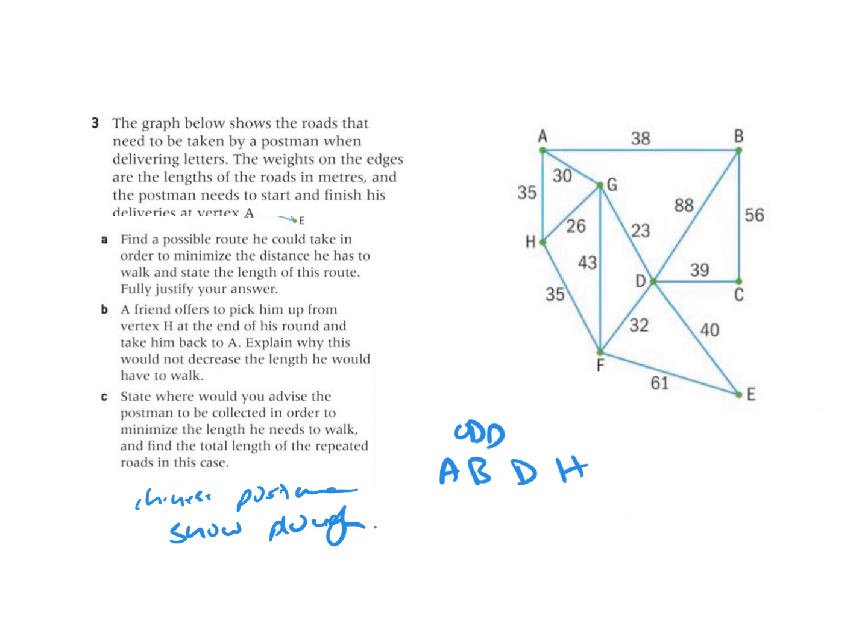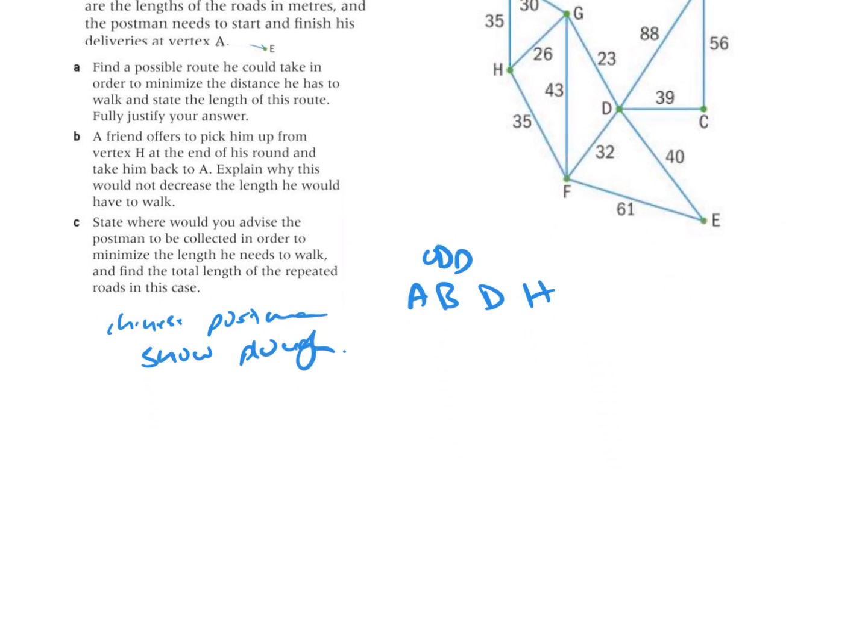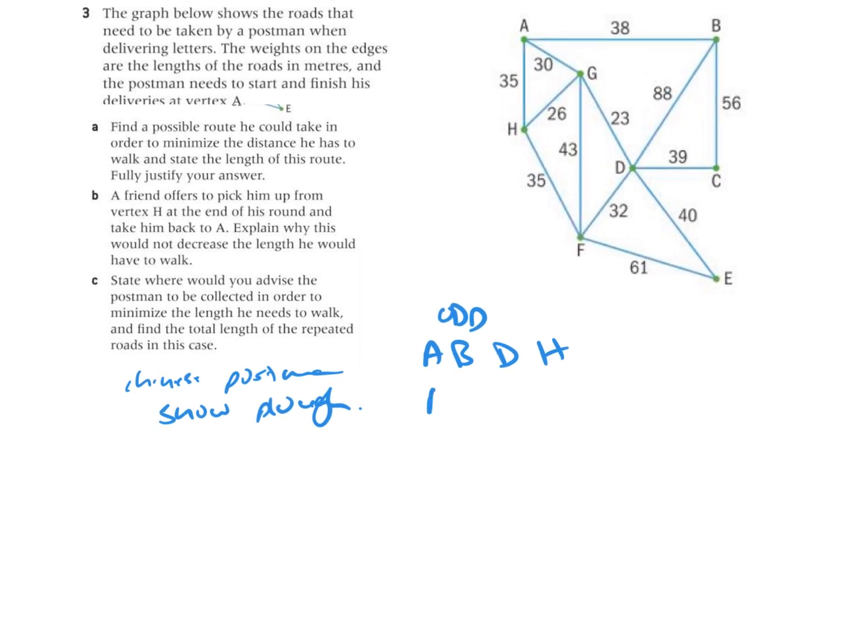Now I need to consider all the possible combinations. It could be AB and DH, or I could be AD and BH, or it could be AH and DB. So I look at this scenario here.